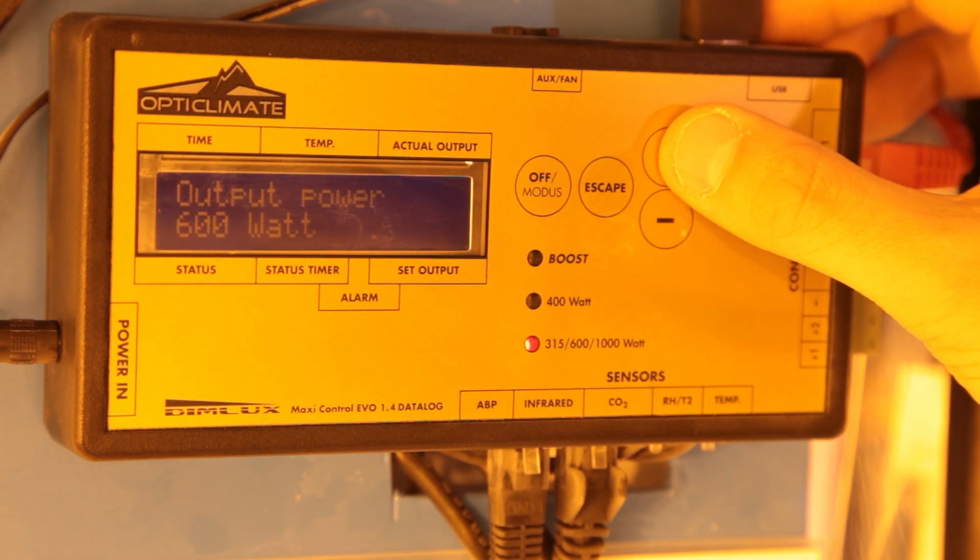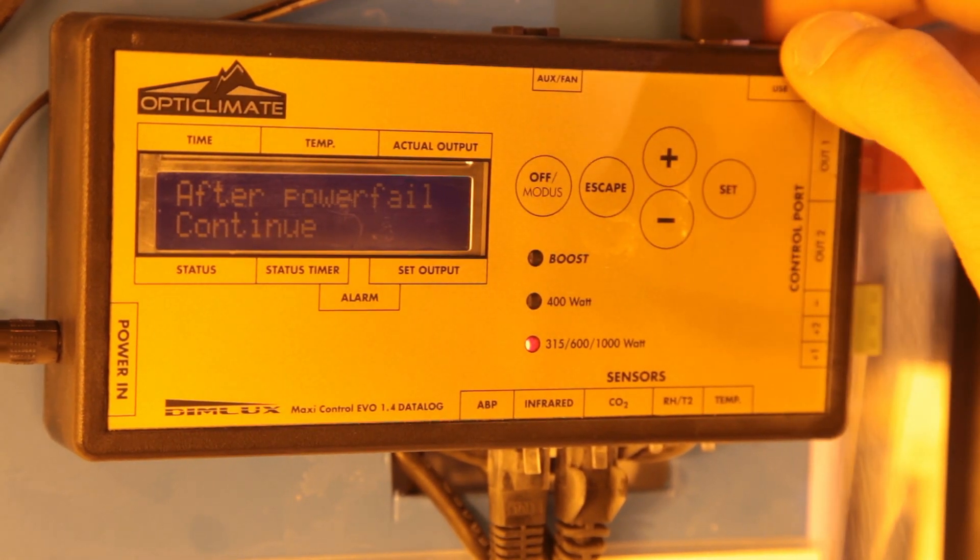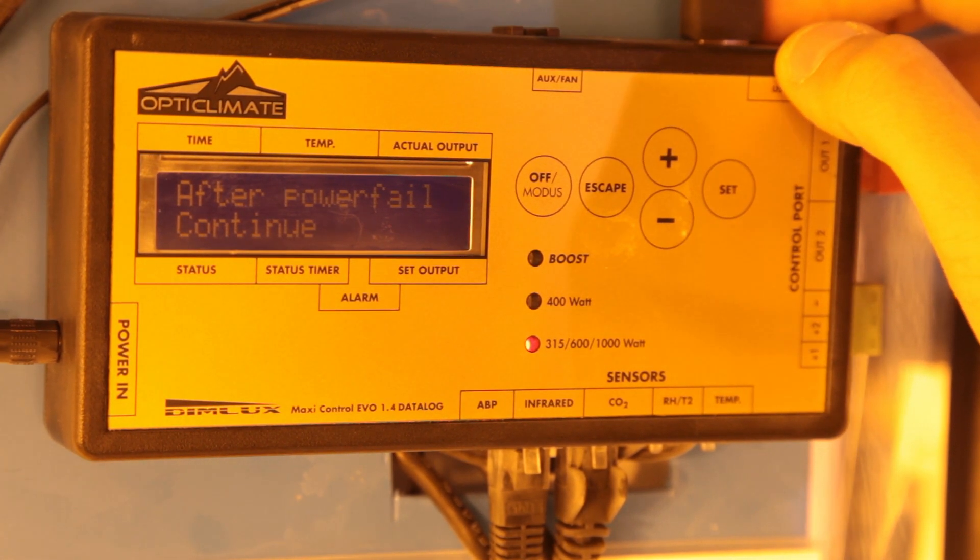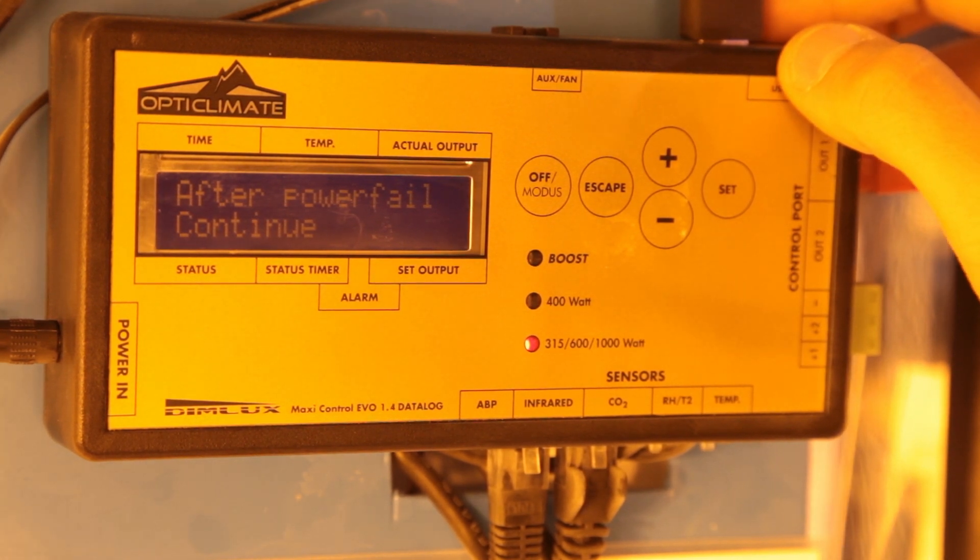Then we've got half false mode which is for alternating between lights to save 50 percent on energy which can work really well in larger rooms. After power fail it's pretty self-explanatory in that it tells the maxi what to do after a power outage. Generally you want to keep this set to continue so that your lights kick back in automatically.